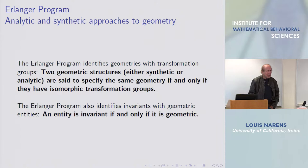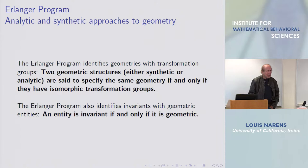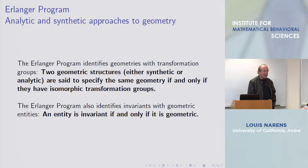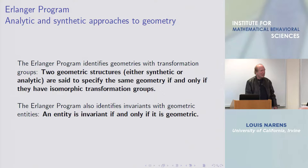The Erlanger program involved two types of geometries. There's analytic geometry, where we have the Euclidean plane as a set of ordered pairs of points and call a line something satisfying a linear equation. A circle satisfies a different equation. Then there's the Euclidean geometry of Euclid where you have lines, points, and congruences—where you move triangles around. That's a very different kind of geometry, but of course they're both the same geometry. Klein was interested in what sense they are the same geometry.